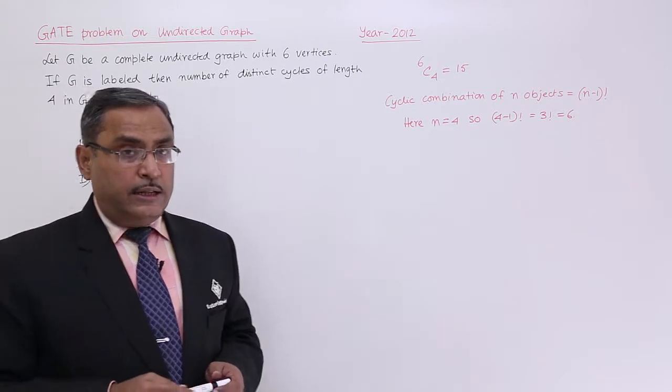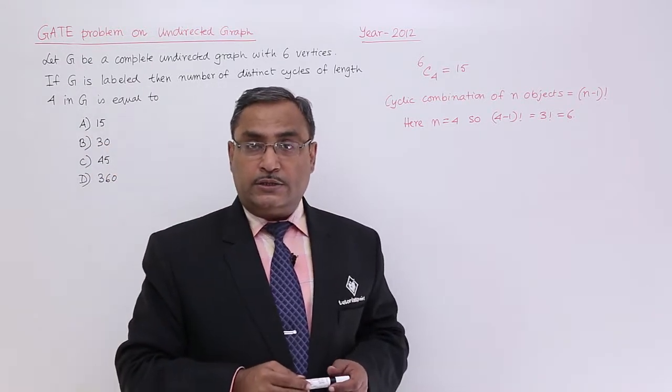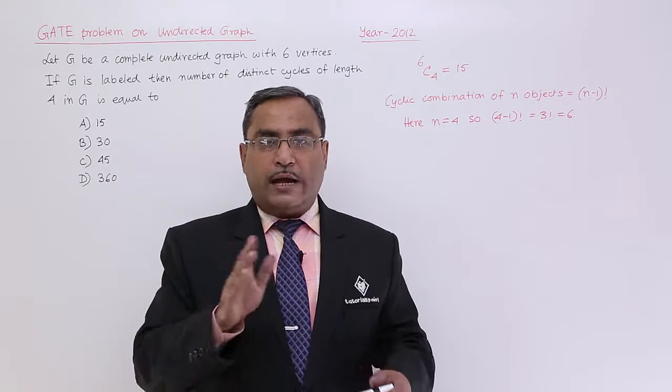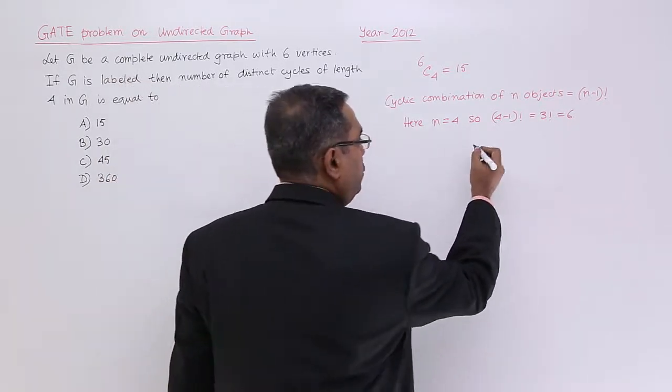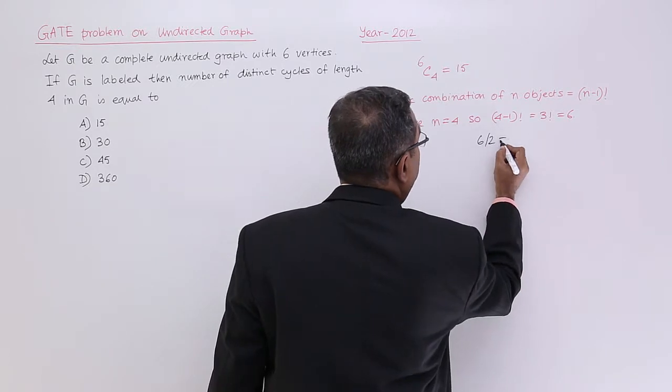But here you see this graph is not directed. The combination whether it is coming left or right, that is immaterial. So the number of combinations will be 6 by 2, which equals 3.